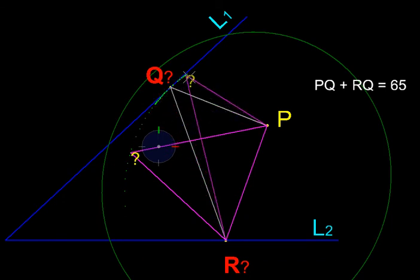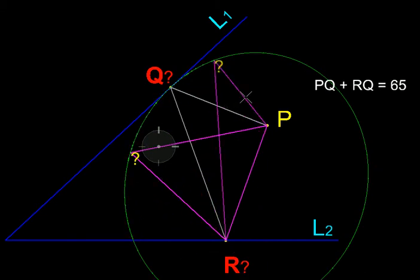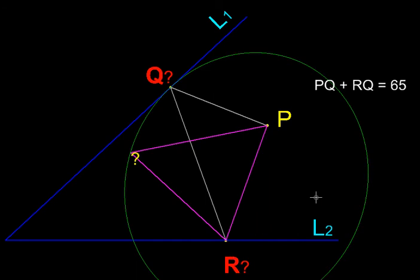So, this ellipse is touching my line L1 only at a single point. And by definition, that makes line L1 a tangent to that ellipse. Now we could have used the same line of reasoning, but in the reverse order by assuming Q is found somehow and P is of course given. In that case, R is the point of tangency of line L2 to an ellipse whose two foci are P and Q.